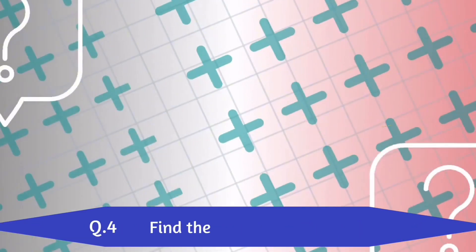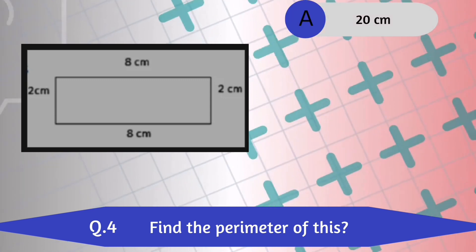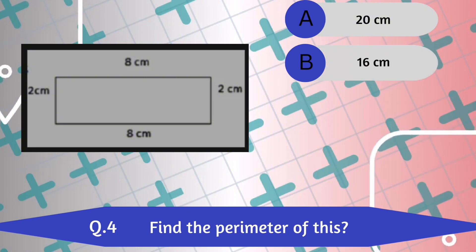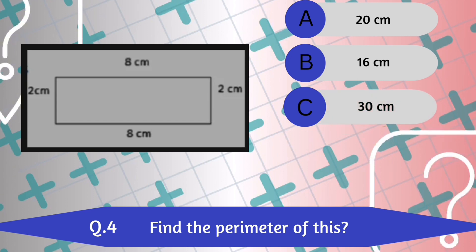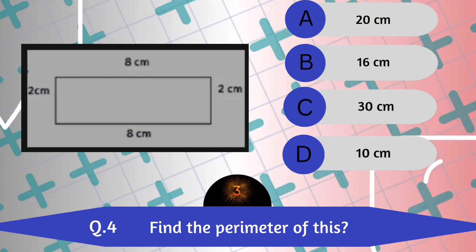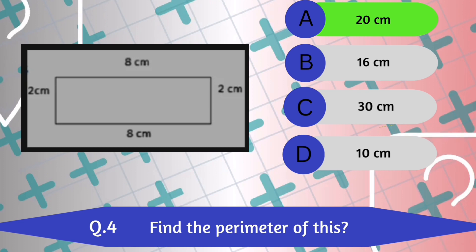Question number 4. Find the perimeter of this. A. 20 cm. B. 16. C. 30. D. 10. 20 cm is the correct answer.